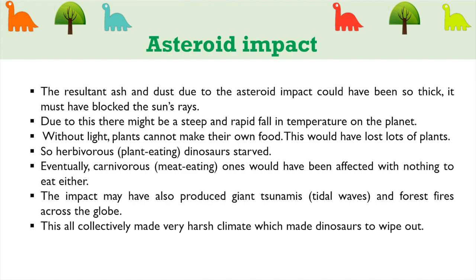The asteroid impact theory comprises the following points. The resultant ash and dust from the asteroid impact could have been so thick it blocked the sun's rays, causing a rapid fall in temperature on the planet. Without light, plants cannot make their own food, causing massive plant loss. Herbivorous dinosaurs starved, and eventually carnivorous ones were affected with nothing to eat either. The impact may have also produced giant tsunamis and forest fires across the globe, collectively creating a very harsh climate that wiped out dinosaurs.